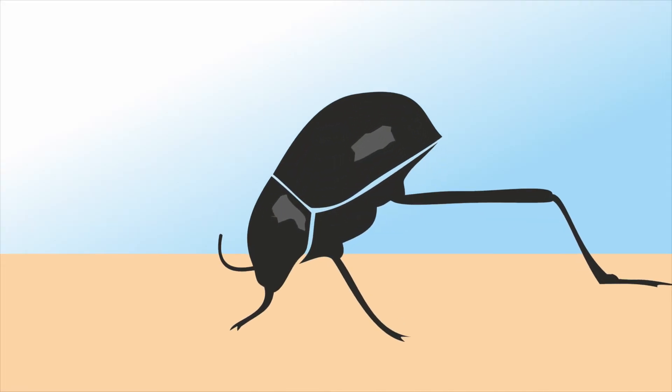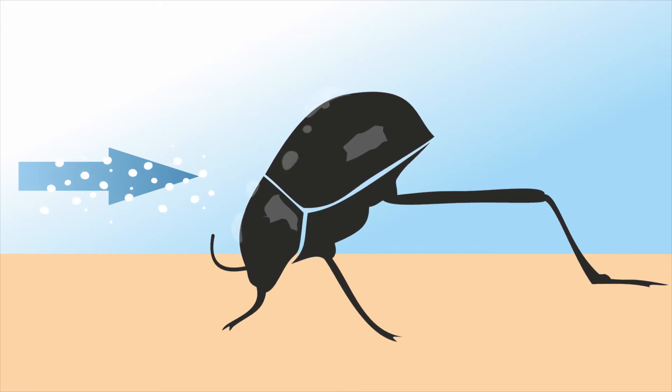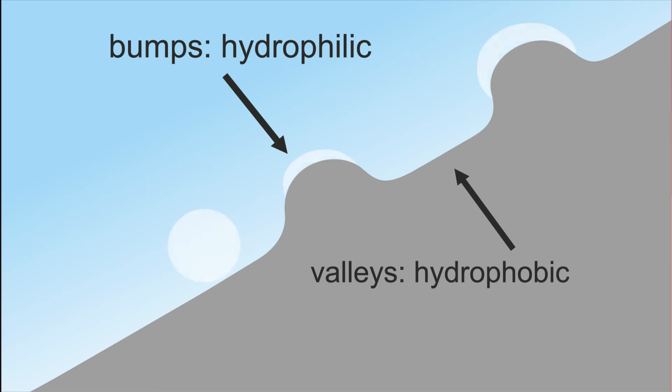An interesting example for this is the Stenocara gracilipes. In order to collect vital water from the wafts of mist, it has developed a special trick. With the particular form and wetting contrast of the wings, drops are collected on the back which then flow to the head.